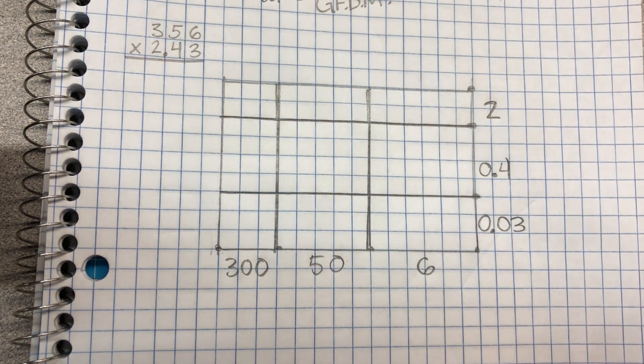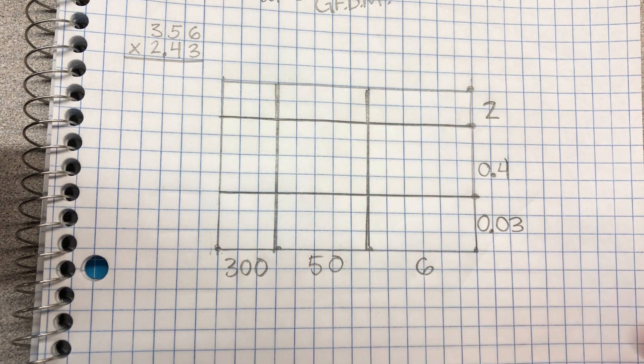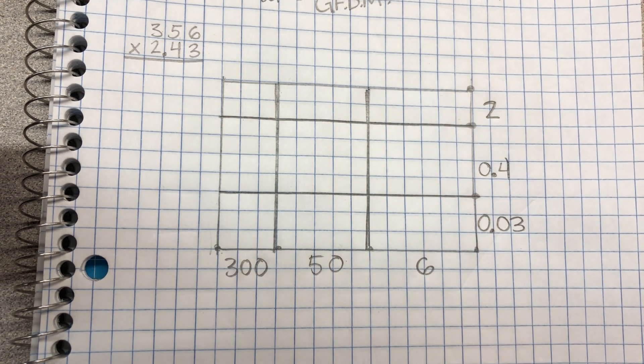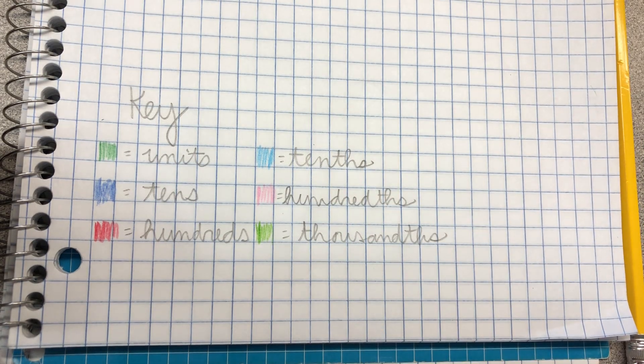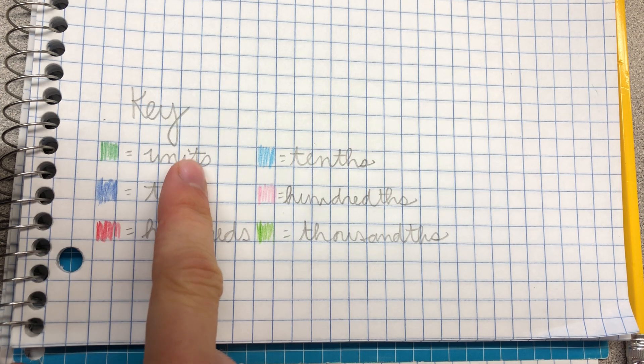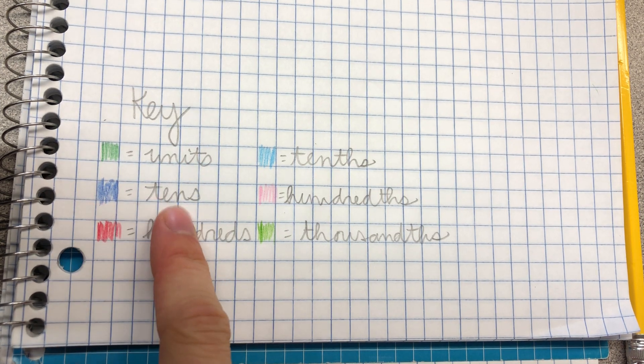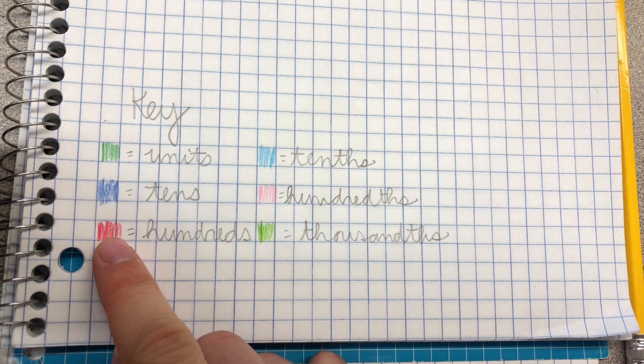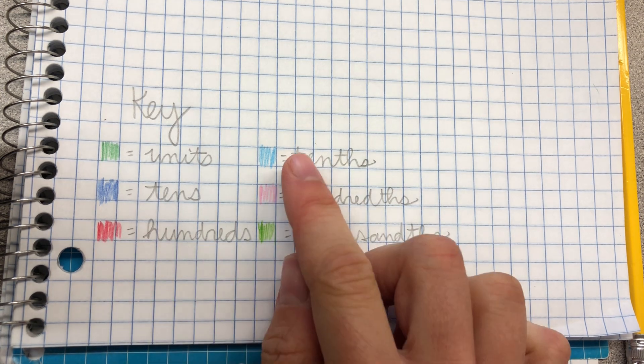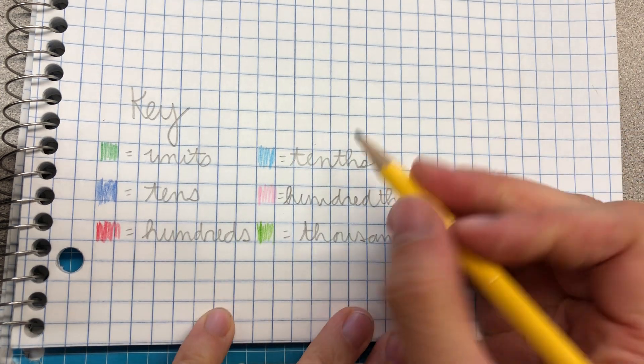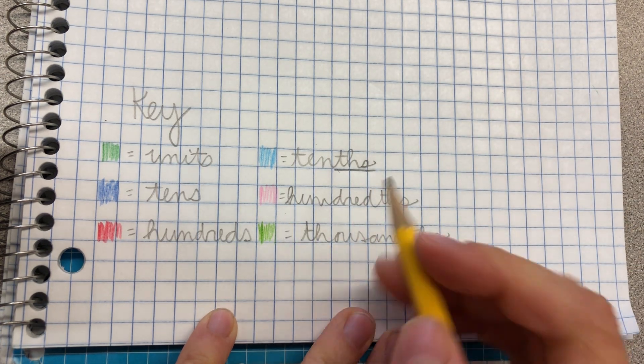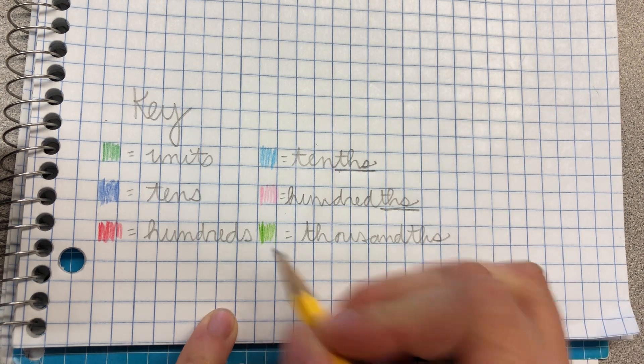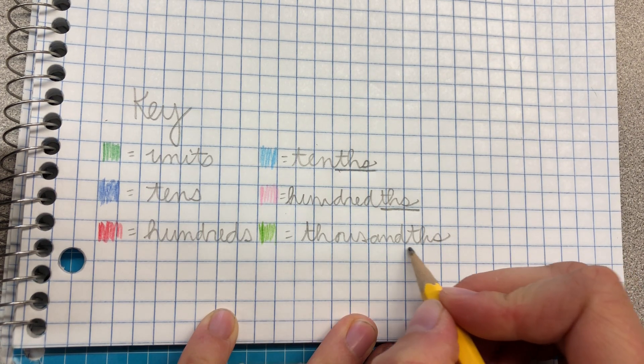Alright, now we get to the fun part, the coloring. And this is where we need other colored pencils than just red, green, and blue. Here I drew a little key for us. So our green represents our units. Our blue represents tens. Red is our hundreds. Light blue represents our tenths. Our pink represents our hundredths. And our light green represents our thousandths.